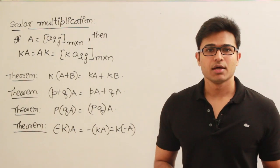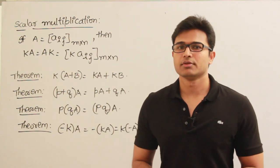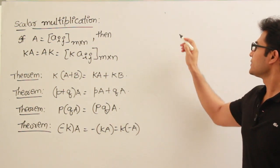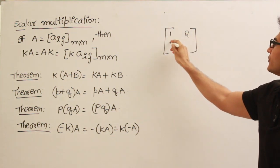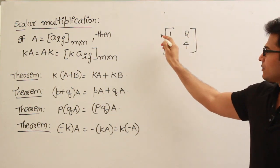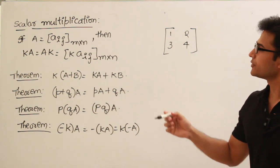Let's see the scalar multiplication. Multiplying a matrix with a number is called scalar multiplication. For example, if you have a matrix like this 1, 2, 3, 4.